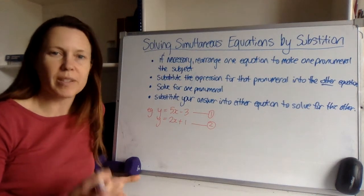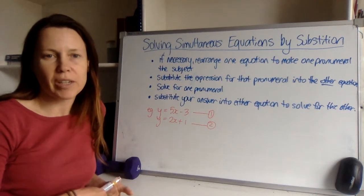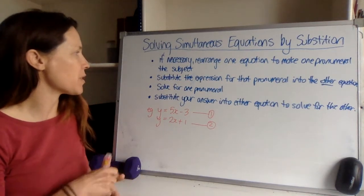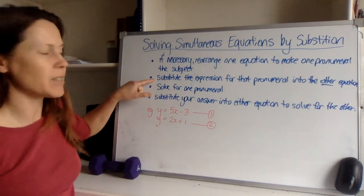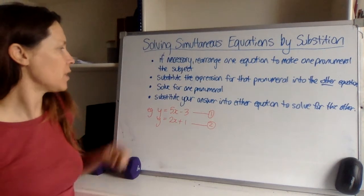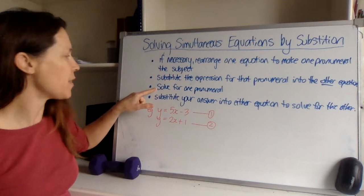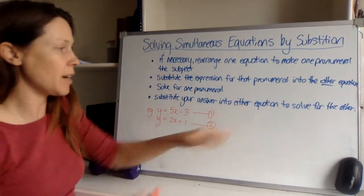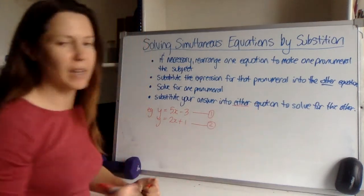To solve simultaneous equations by substitution, start by checking if you need to rearrange one equation to make one pronumeral the subject. Then substitute the expression for that pronumeral into the other equation, solve for one pronumeral, and substitute that answer into either equation to solve for the other.